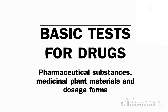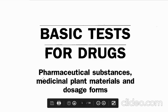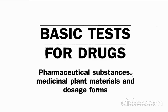So let us have a review. As the name indicates — basic test for drugs — we are very much aware about the drug definition: what type of chemical moiety or substance we can call a drug, and what should be the minimum requirement. Pharmaceutical substances are agents which will be useful for the manufacturing of medicine or dosage forms. It is the pure drug, which is known as a pharmaceutical substance. The second category is medicinal plant materials.